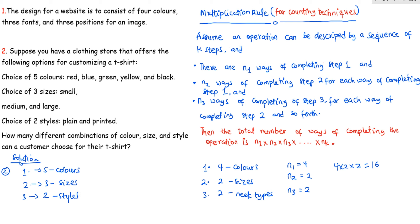So n1 equals five, n2 equals three, and n3 equals two. The total number of combinations is five times three times two, which gives us 30 different combinations.